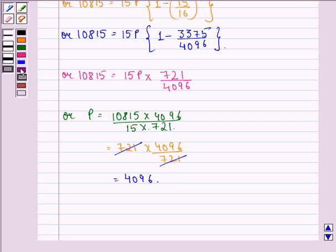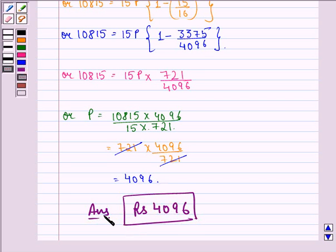Thus, each value of installment is rupees 4,096. So I hope that you understood the solution and enjoyed the session. Have a good day.